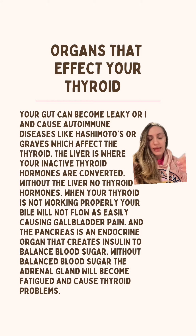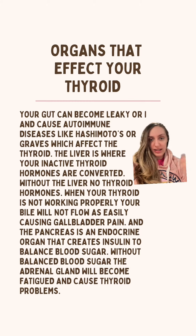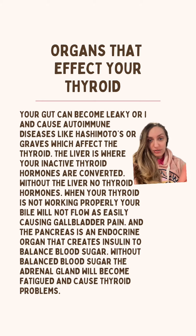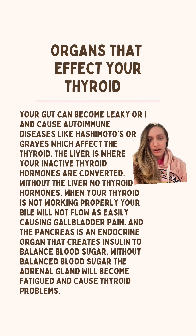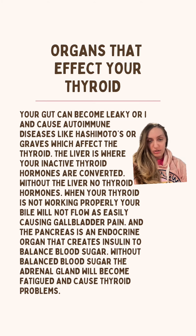Your thyroid looks at your adrenal glands as an emergency backup — if your thyroid isn't releasing hormones properly, your adrenals come in as a sidekick to help it. But if your adrenals are not working properly because you're not balancing your blood sugar and your pancreas isn't helping with insulin, then your thyroid is also affected.